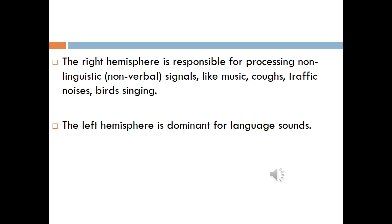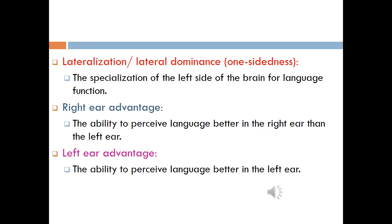Generally speaking, the right hemisphere is responsible for processing non-linguistic, non-verbal signals like music, coughs, traffic noises, and bird singing, while the left hemisphere is dominant for language sounds. This is also supported by the right ear advantage — the ability to perceive language better in the right ear than the left, because sounds received in the right ear are processed directly in the left hemisphere, which is responsible for language production and comprehension.